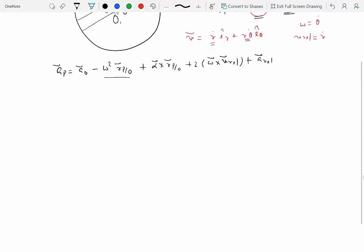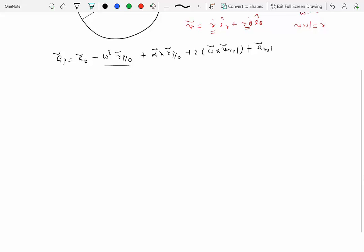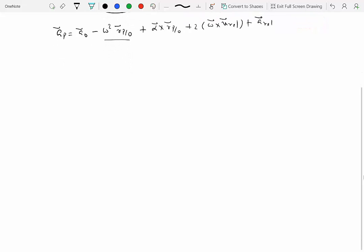So this is zero, we have minus omega square R of P with O plus alpha k cross R i hat plus 2 omega k cross V relative along i direction plus A relative also along i direction.